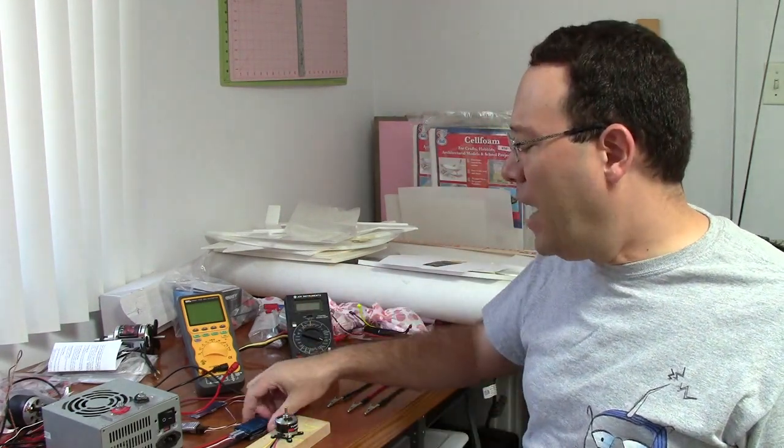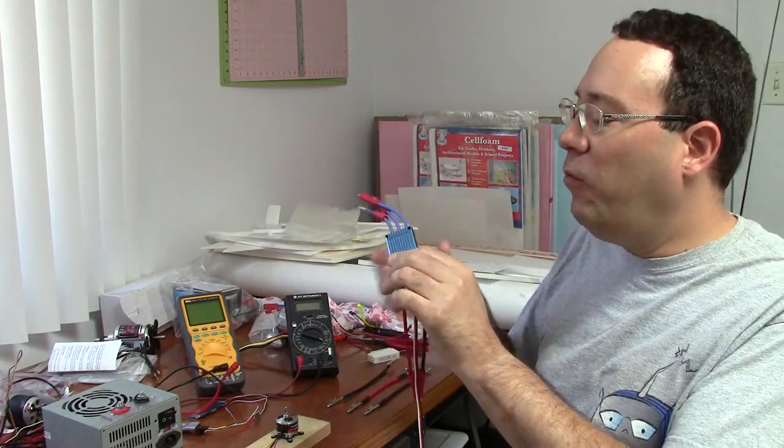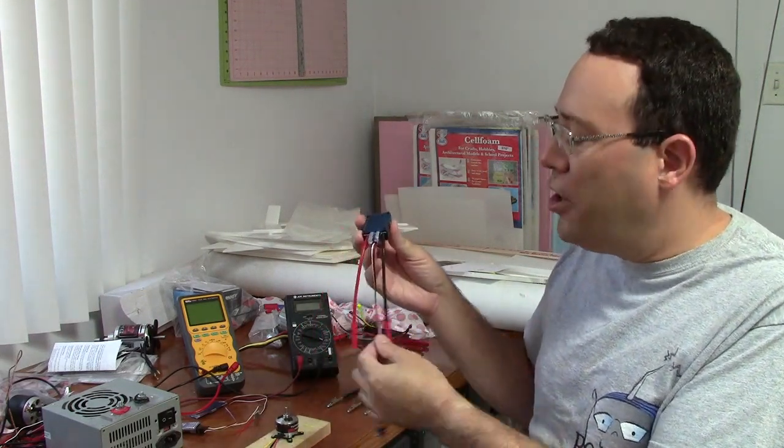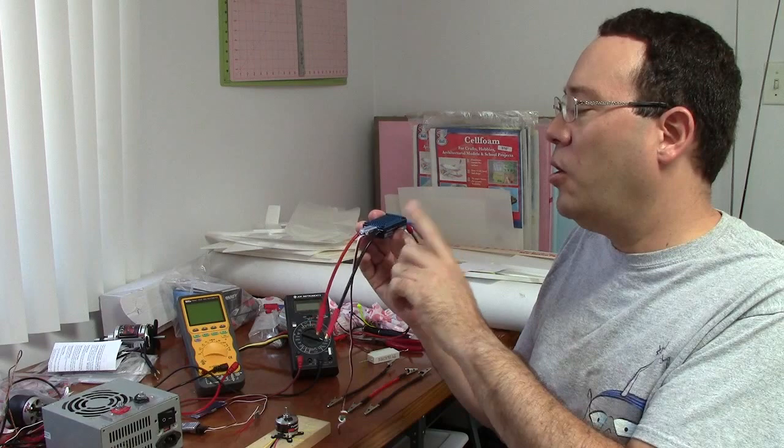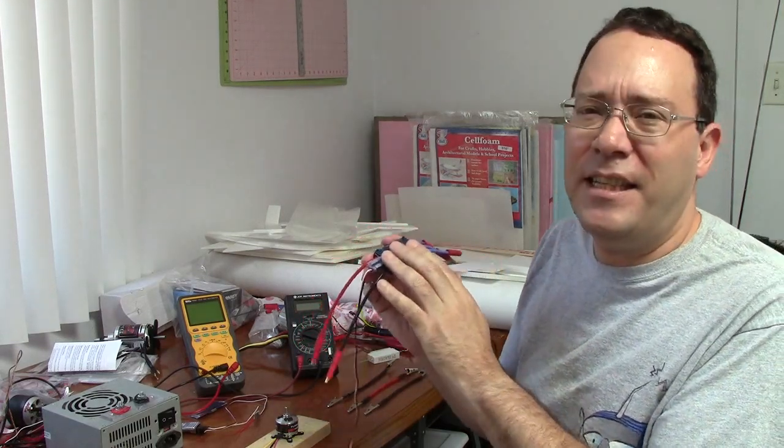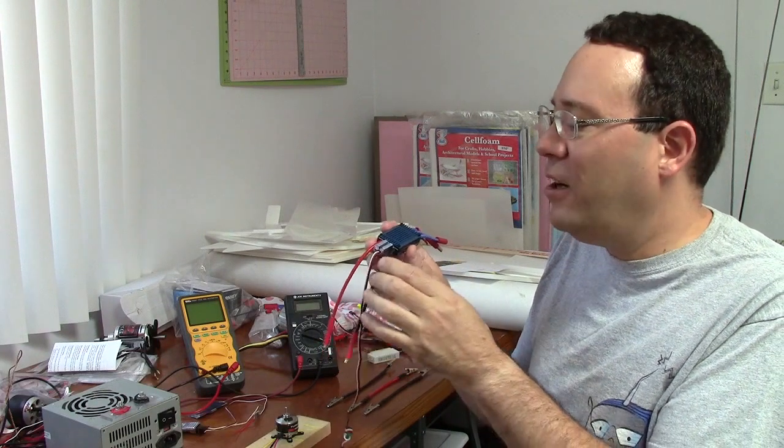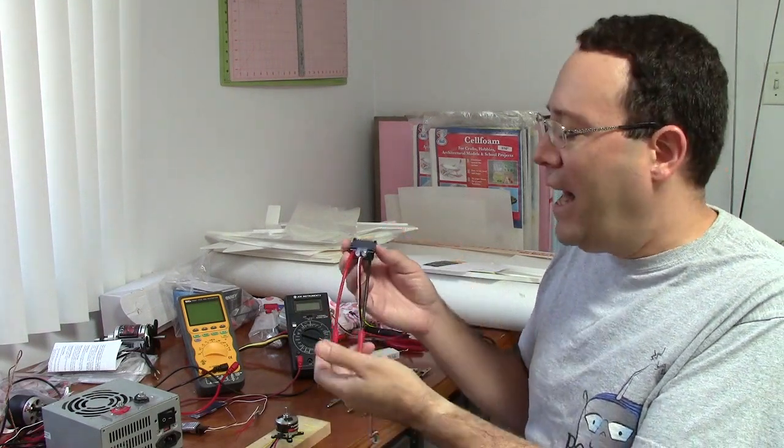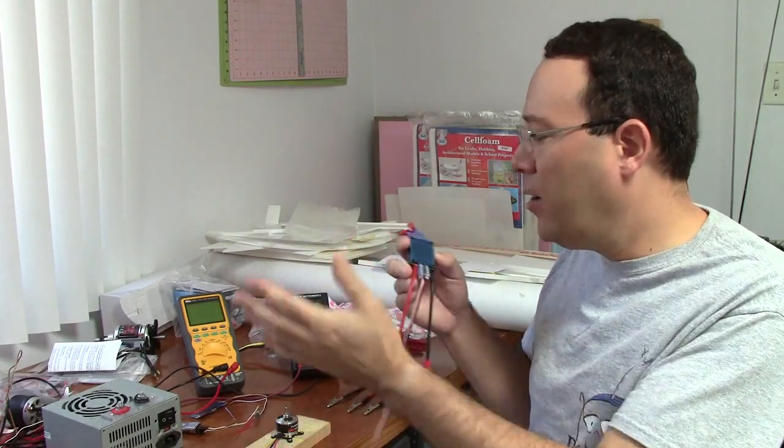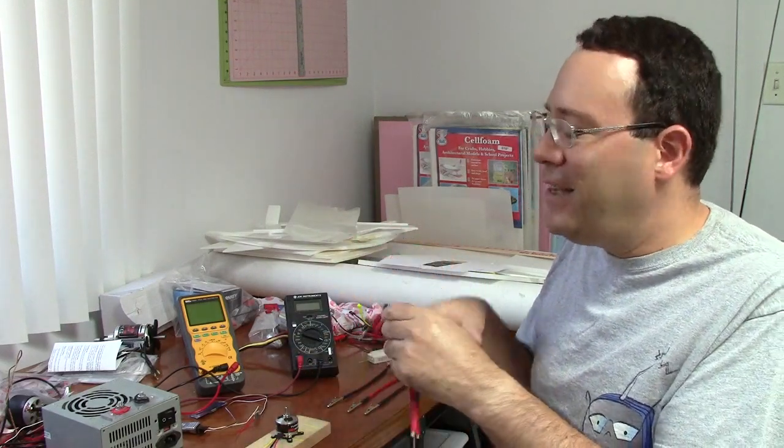But what I do is just measure the voltage and the current at the input to the speed control, which of course, the speed control itself has its own resistance. So it's not going to be 100% accurate. But the resistance is not that much, so it's not going to affect the results too much. And it just makes it a lot easier. You can use a wattmeter. You can use the regular multimeters. And I think that's the way to go.